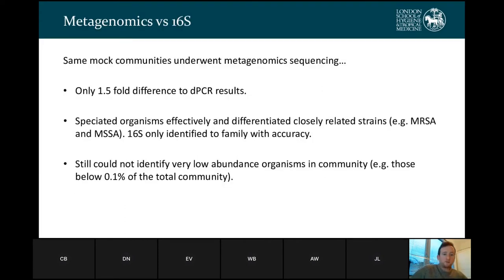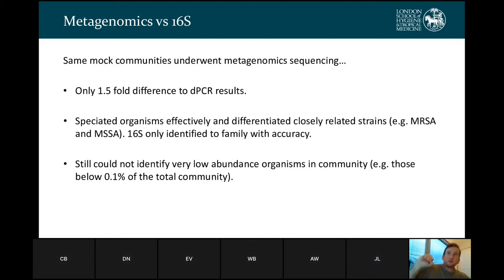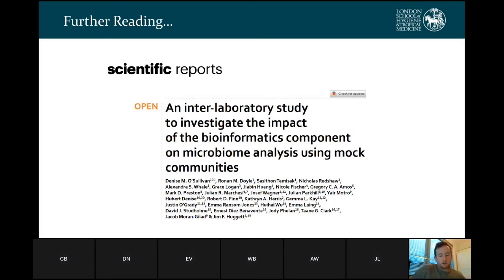So you would say that 16S is a cheap and quick method for profiling bacterial communities and is good for large-scale snapshots. When we compared that with metagenomic sequencing, we found that shotgun metagenomics only found a 1.5-fold difference compared to the digital PCR results — much, much closer to the original sample. It is also able to speciate organisms effectively; in MCM-2-alpha it could differentiate MRSA and MSSA, whereas 16S could only match at family-level accuracy. We still could not identify very low abundance organisms in the community even with metagenomics. The full results and recommendations from that study can be found in a paper in Scientific Reports.